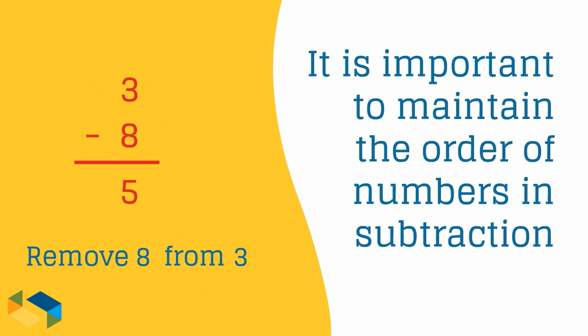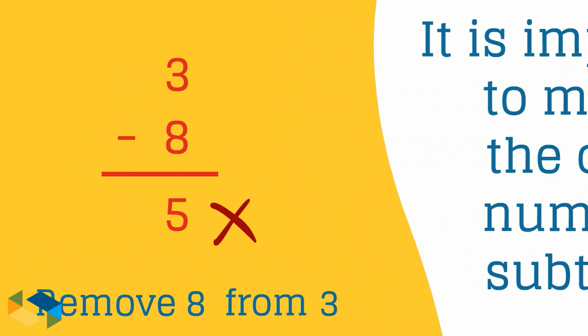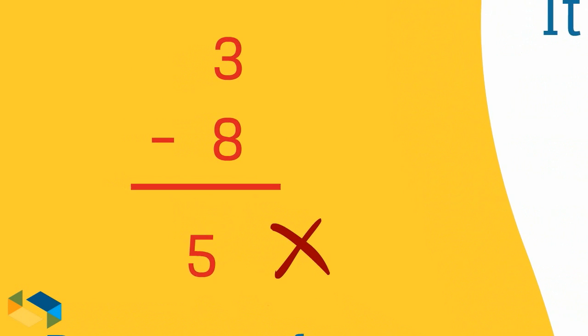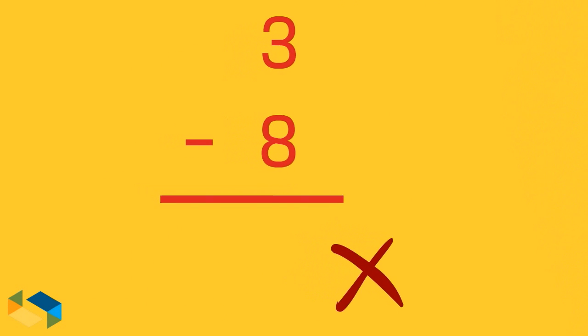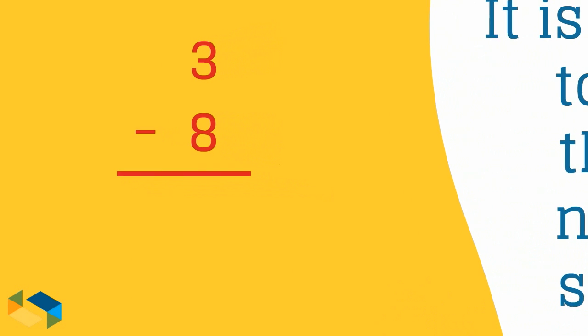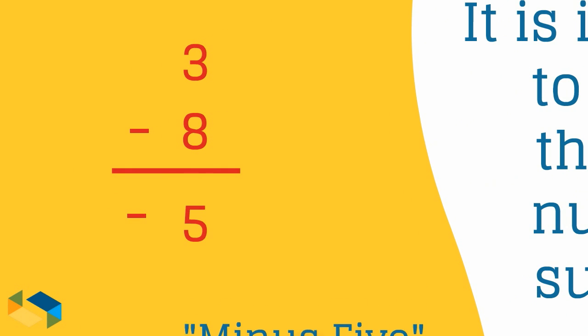However, if we interchange the order of writing these numbers, the answer doesn't hold true. The answer for three minus eight, as a matter of fact, is minus five.